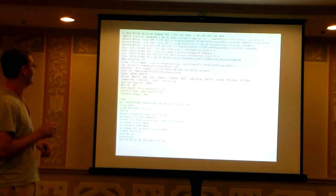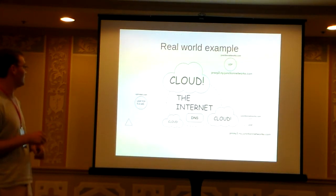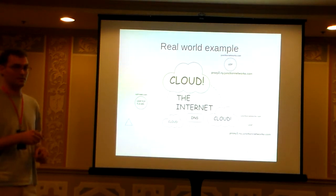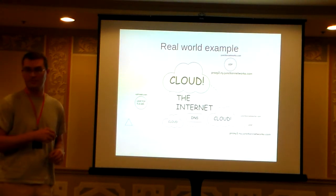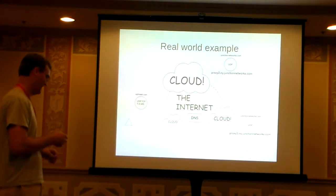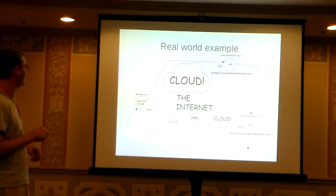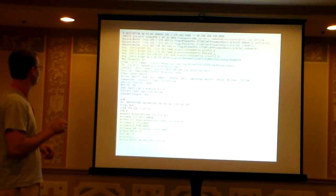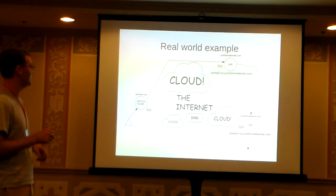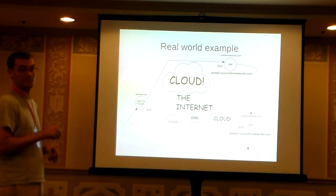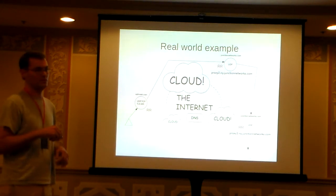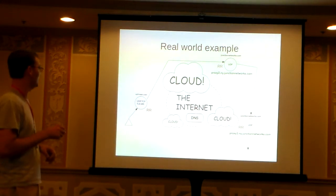Looking at this again — we've got record route 107.170.192.145, then .102, then .103. Anybody care to guess how this call routed? So eric@ufreek.com sends it through the outbound proxy at ufreek.com, which inserts a record route header — that's the bottom-most record route of .145. The next record routes are .102 and .103, so proxy 2 is .102 and proxy 3 is .103. This call traversed three proxy servers to get to junction networks.